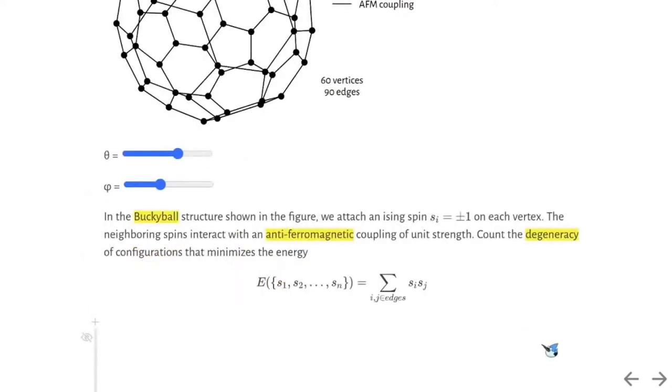The naive approach to solve this problem is to enumerate all possible spin configurations and find those with the lowest energy. This is not practical because the total number of configurations is 2 to the 60.